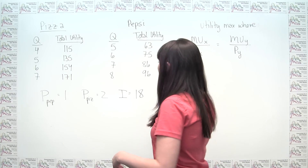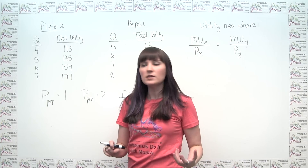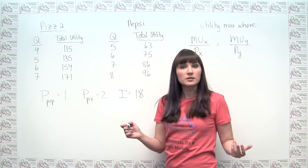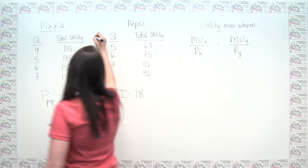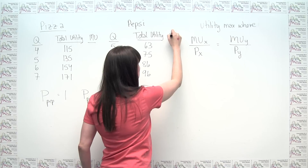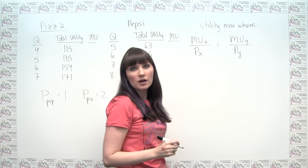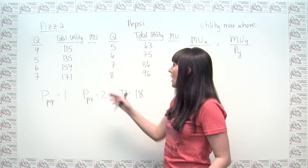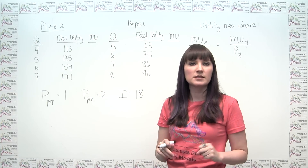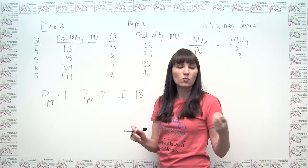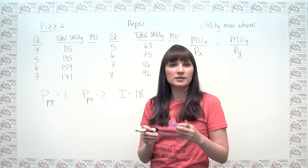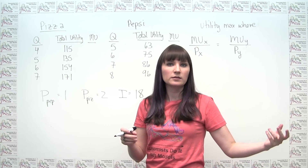In order to analyze this concept against these numbers, we're going to have to calculate marginal utility. I'm going to add in a marginal utility column for each good. Marginal utility is the additional utility — additional happiness — you get from consuming one more of something. Mathematically, marginal utility is the change in total utility divided by the change in quantity.